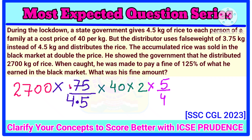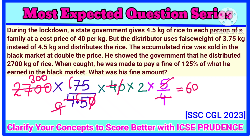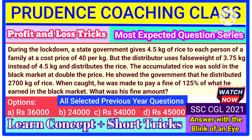Now remove the decimals. Zeros cancel, 4 and 4 cancel, 5 nines are 45. So 9 multiplied by 300 is 2,700. 300 multiplied by 2 is 600, multiplied by 75 is 45,000. So the dishonest distributor has to pay a fine of 45,000 rupees.